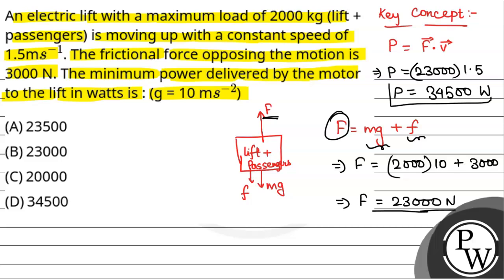So this is the minimum power, that is 34500 watt, which is option D. Hope you all understood it well, best of luck.